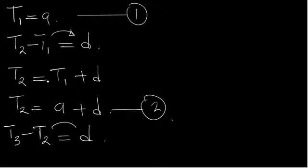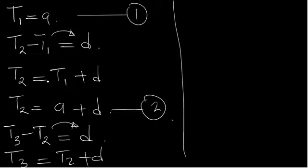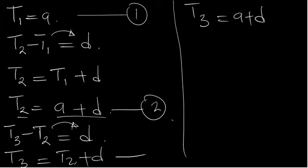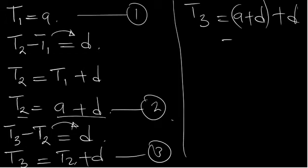If we move the second term to the other side, we have the third term equal to the second term plus D. Now substituting the second term — which equals A plus D — into equation 3, we get A plus D plus D, which gives us A plus 2D, because D plus D equals 2D. So this is the third term.